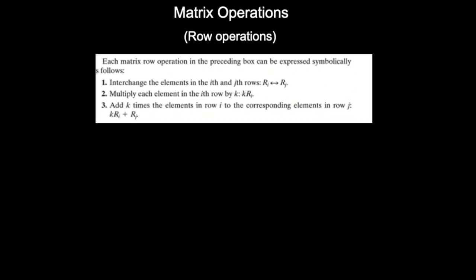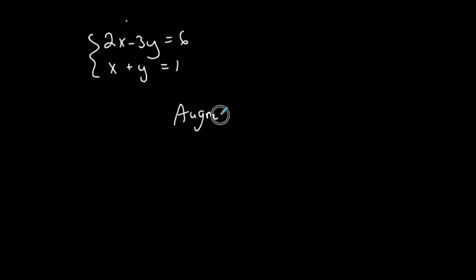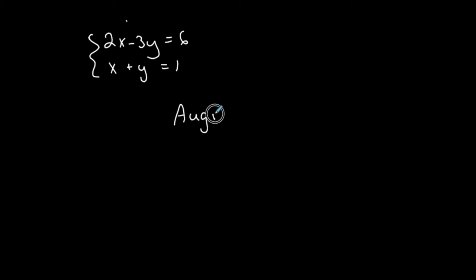This video is about matrices and converting back and forth between a system of linear equations and a matrix — what we call an augmented matrix — and then matrix operations that we can do with matrices. We'll start with a system of two variables and rewrite it in matrix form. The matrix that comes from the system is called the augmented matrix of the system.